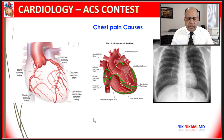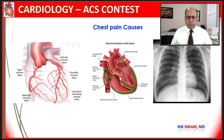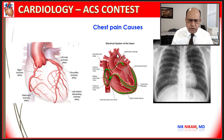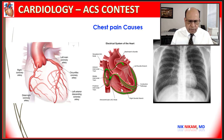Coronary artery disease is not the only thing that causes chest pain in the adult population. Within the heart, chest pain can be related to valvular heart disease like aortic stenosis, hypertrophic cardiomyopathy, infiltrative cardiomyopathy, aortic dissection, right ventricular strain from pulmonary hypertension, or pericarditis and myocarditis. These are some of the unusual conditions that can cause chest pain.